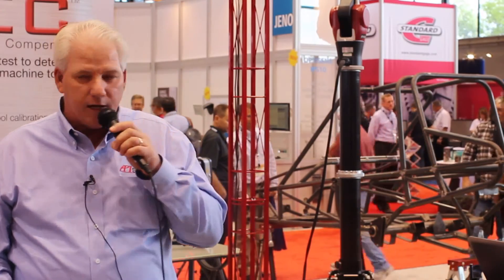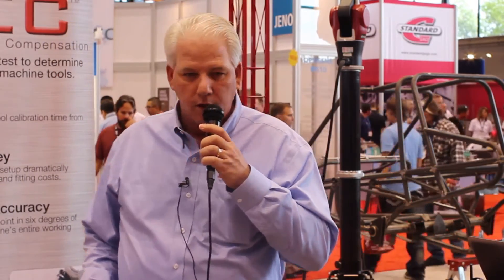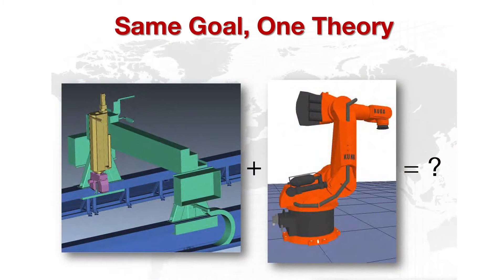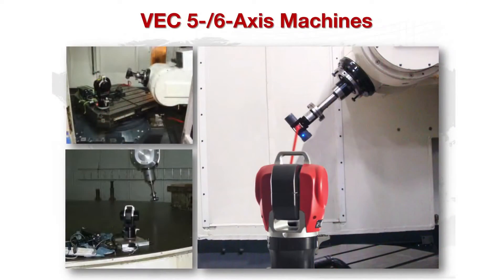VEC was developed based on the same theory used for robotic calibration, where a kinematic error model describes the errors of the links and joints of the robot, and corrections are done through a six-error matrix transformation of all joint errors. We've taken that and implemented it into the machine tool, mapping all 21 errors. In the photographs shown, the tracker is sitting on a turntable so we also capture the rotary axis simultaneously.